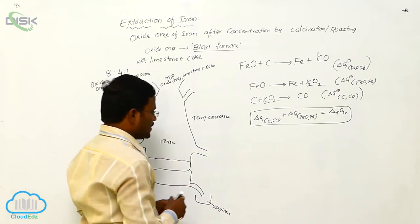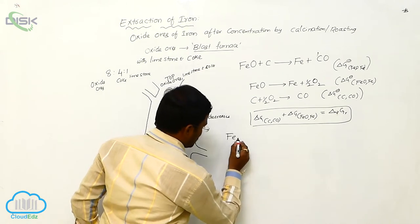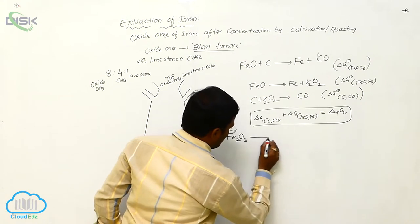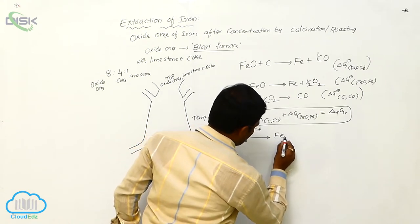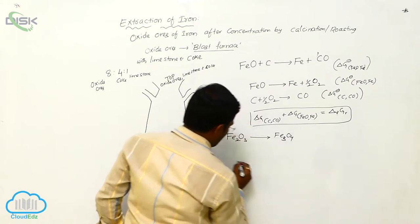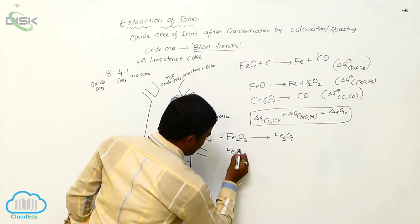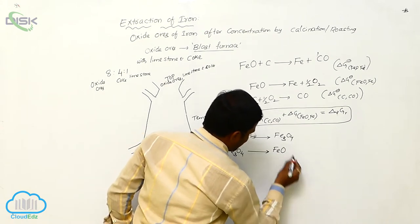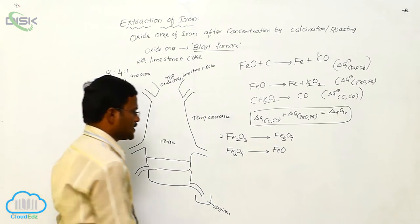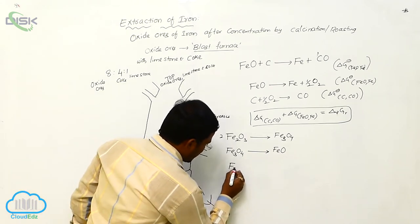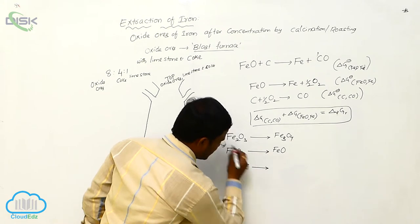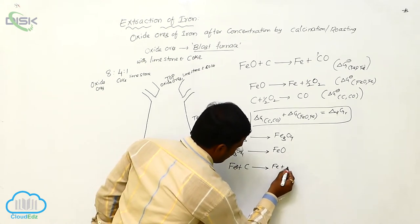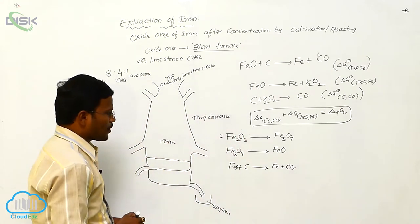During this process, at various temperatures, first Fe2O3 is converted into Fe3O4. This Fe3O4, when heated at different temperature, is converted into FeO, ferrous oxide. This ferrous oxide will react with carbon present to convert Fe plus carbon monoxide.